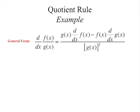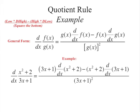Next is the quotient rule. If differentiating f of x divided by g of x, it equals g of x times the derivative of f of x, minus f of x times the derivative of g of x, all divided by g of x squared. A mnemonic: call g of x 'low' and f of x 'high' — low d high minus high d low, square the bottom and away we go.